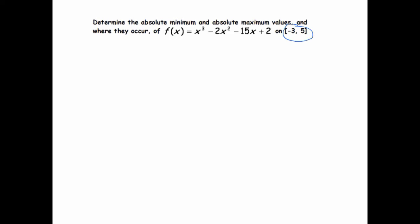So our answer is not going to be that there is none. So the first thing we're going to do is find the critical points. We do that by taking the derivative. So this is equal to 3x² - 4x - 15.